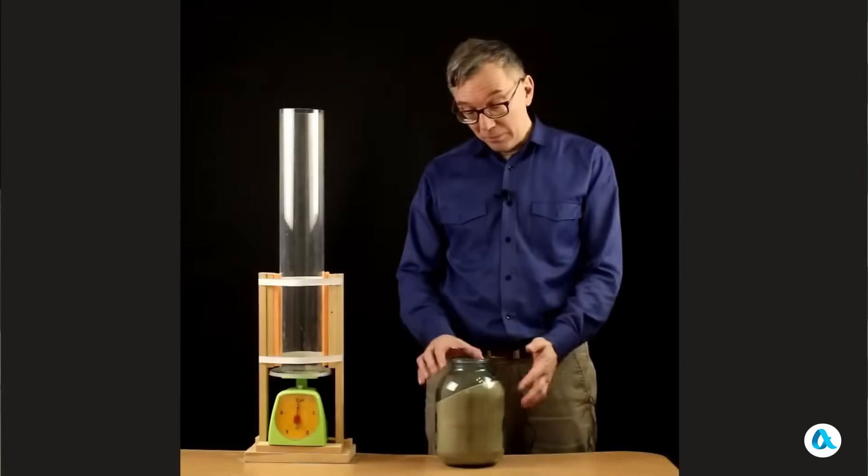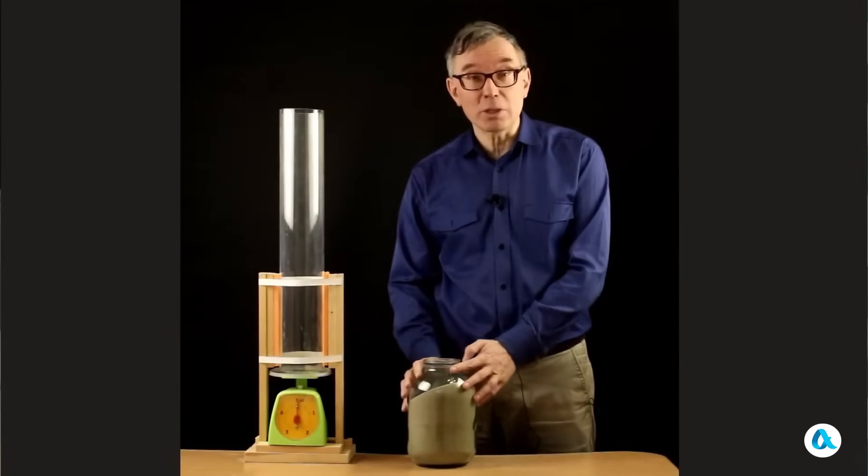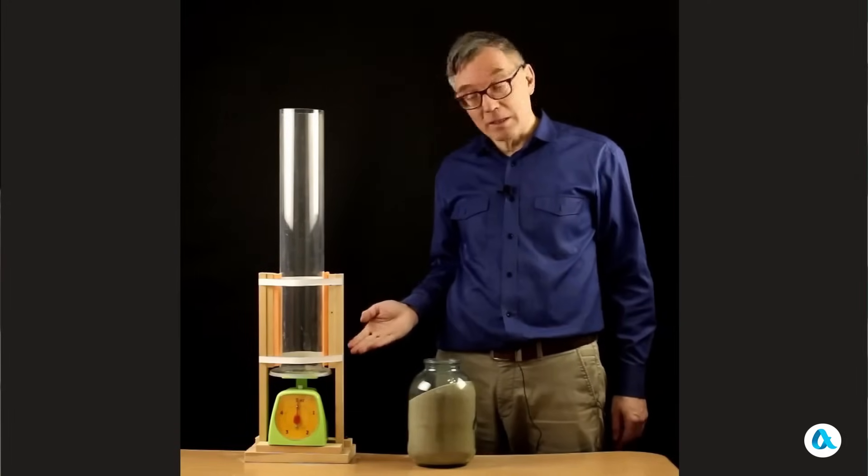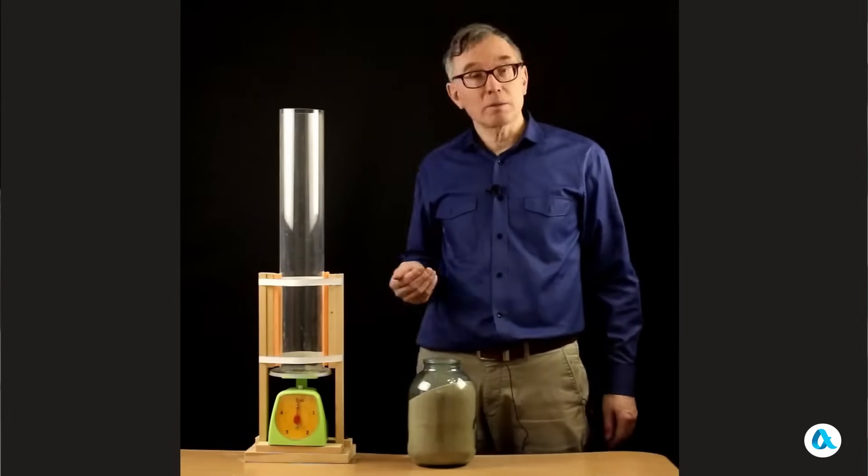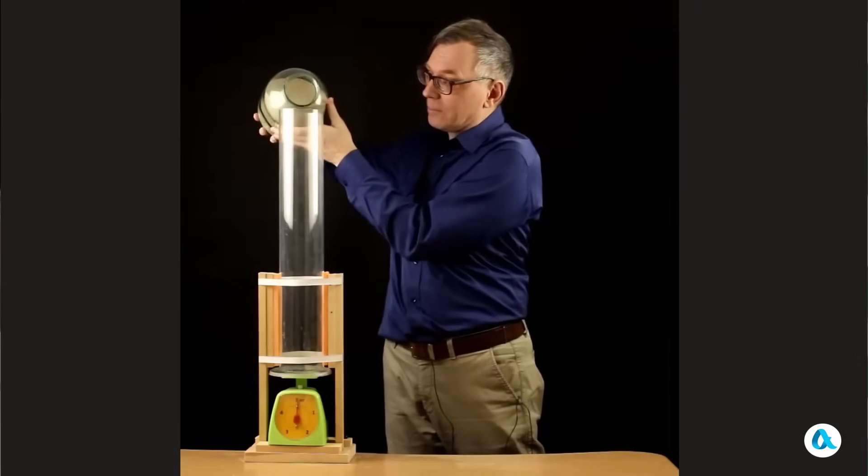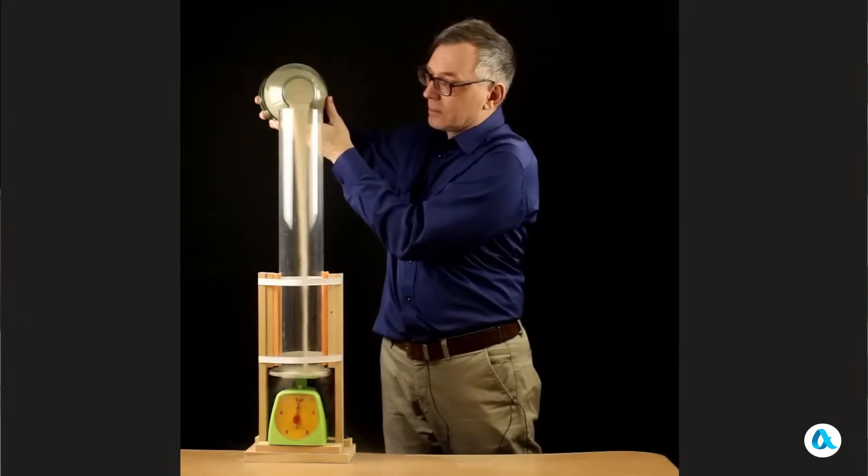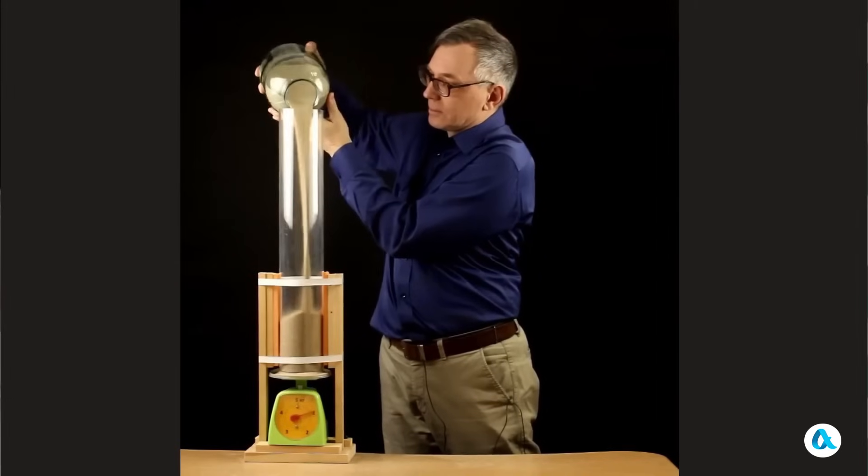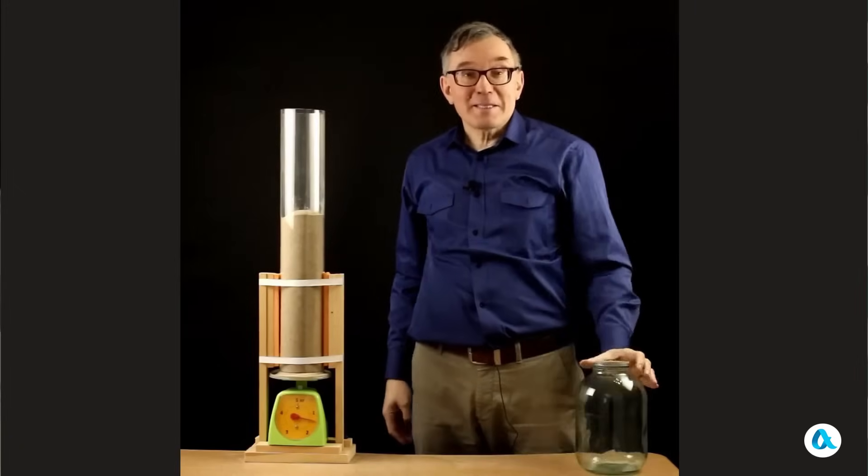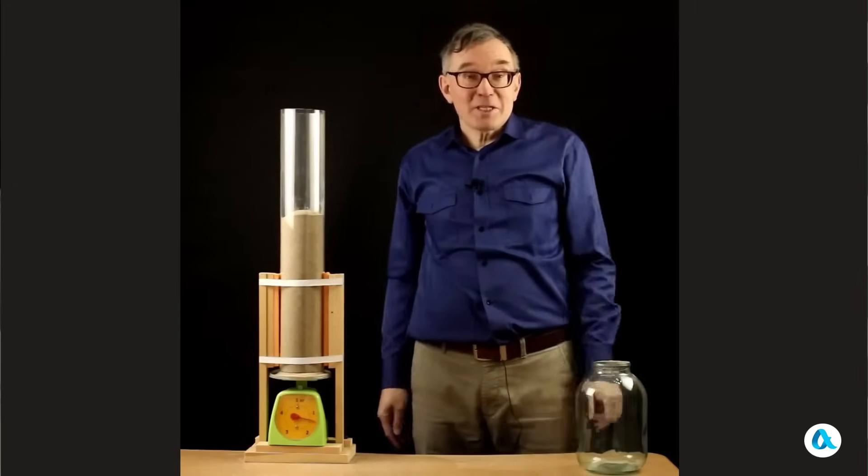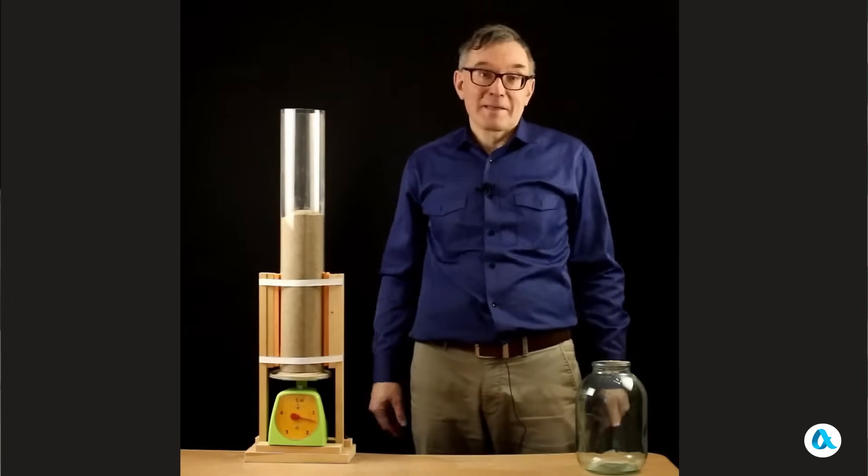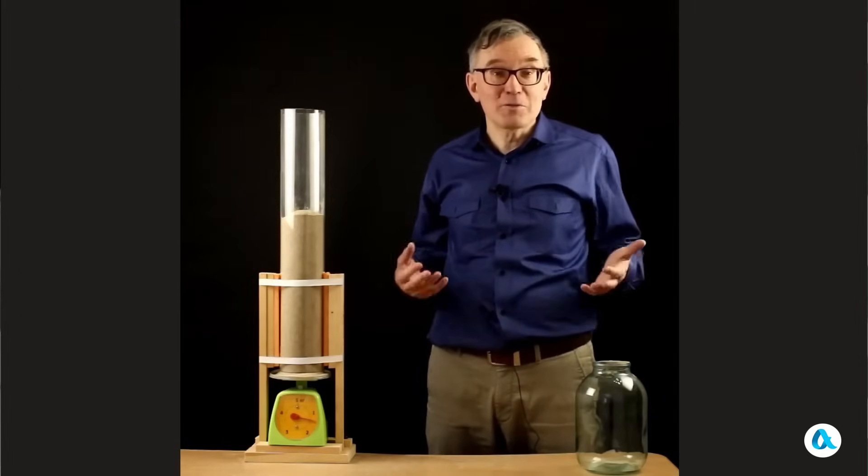We'll start with this experiment. Here in this jar, I have four kilograms of sand. And I'm going to pour this sand into a tube. Underneath it, there are scales. And on top, there's a lid to prevent the sand from spilling out to the sides. Let's see what it shows us. The scales showed less than one and a half kilograms, one hundred and forty grams. Where did the other kilograms go? Let's try to explain this paradoxical result.